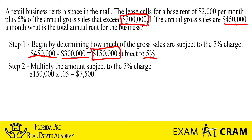In step two, we want to multiply the amount subject to the 5%. We already determined that $150,000 is our figure, and we take that and multiply it by 5%, which is 0.05, which gives us a total of $7,500. That's going to be the additional annual amount that we have to pay above and beyond the base rent.